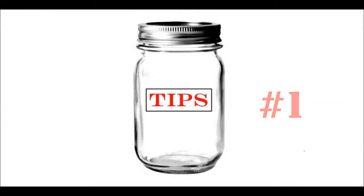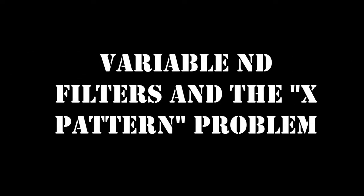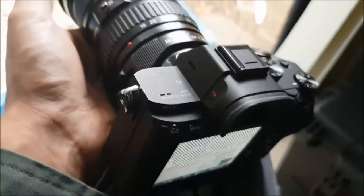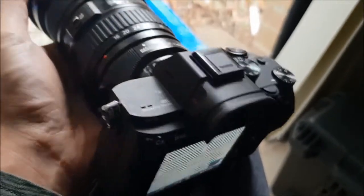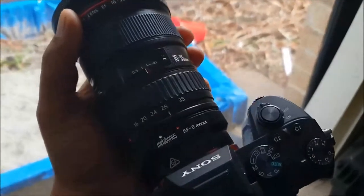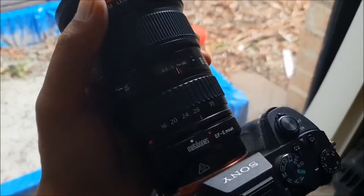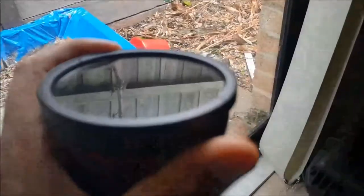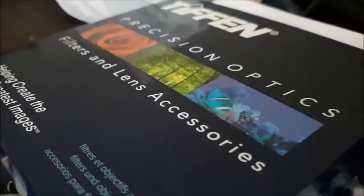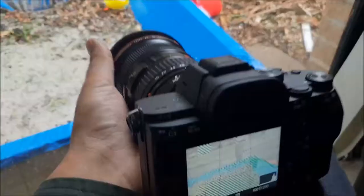Hi guys, just a quick video about variable ND filters and the mysterious cross pattern that appears for some people. It usually happens with a full frame camera like this A7 Mark III right here. I'm using a 16-35mm lens with a Tiffin variable ND filter. But it can basically happen with any camera with a variable ND filter attached.